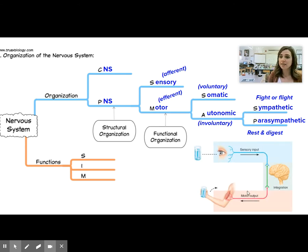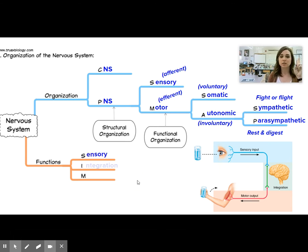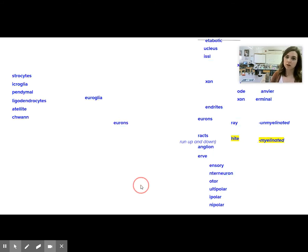All right, the nervous system functions. Again, this kind of picture, this is literally these three things. My nervous system functions to sense the world around me, to decide what to do, integration, and then to have some action, motor output. That's it. That's all my nervous system does.